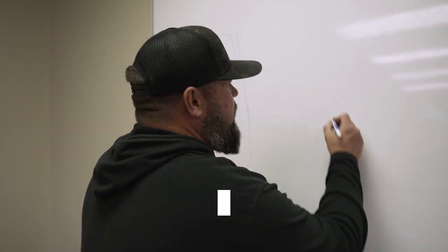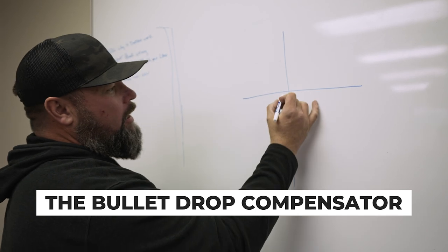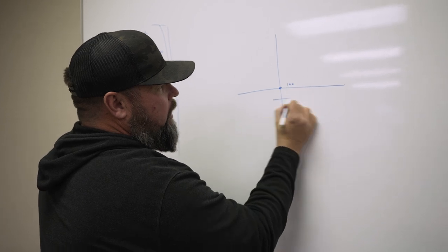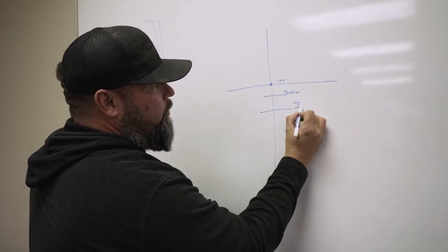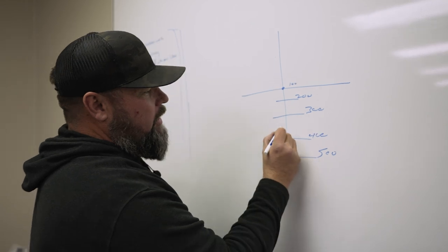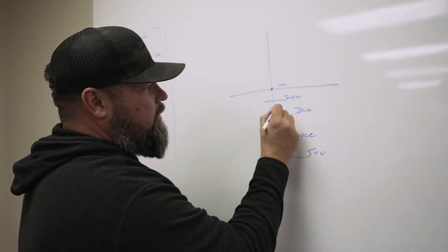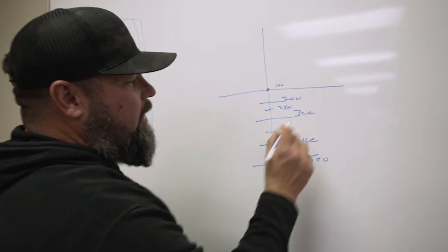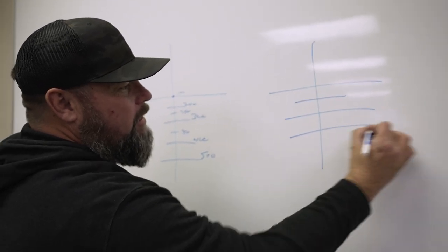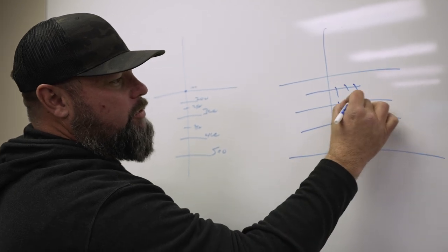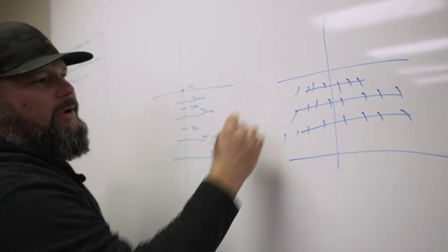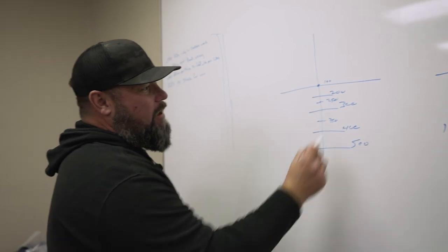So BDC — what this means is the bullet drop reticle: this is where you zero your rifle, and then let's say you zero it at 100, then this is 200, 300, 400, 500. And then maybe here is 350 and this next one underneath there is 250. Don't get too caught up on this because it can also look like a Christmas tree. It doesn't matter what it looks like — it could look like a Christmas tree and it all ends up being the same thing in the bullet drop compensator reticles. Doesn't matter how you choose it, but for now let's use this one.